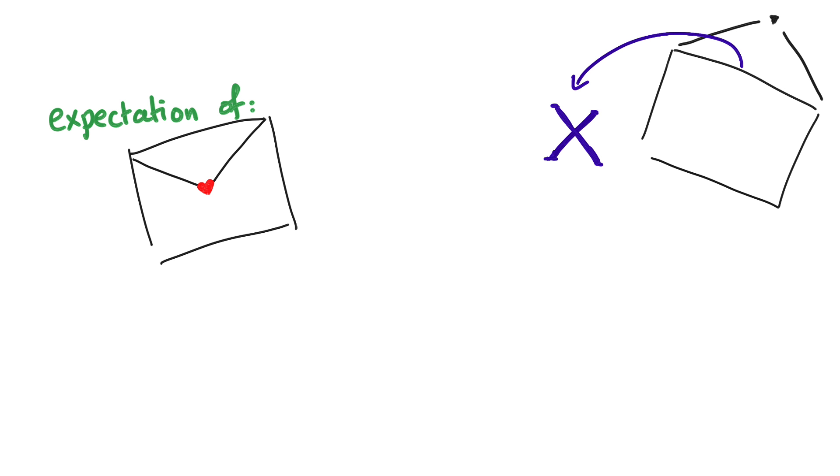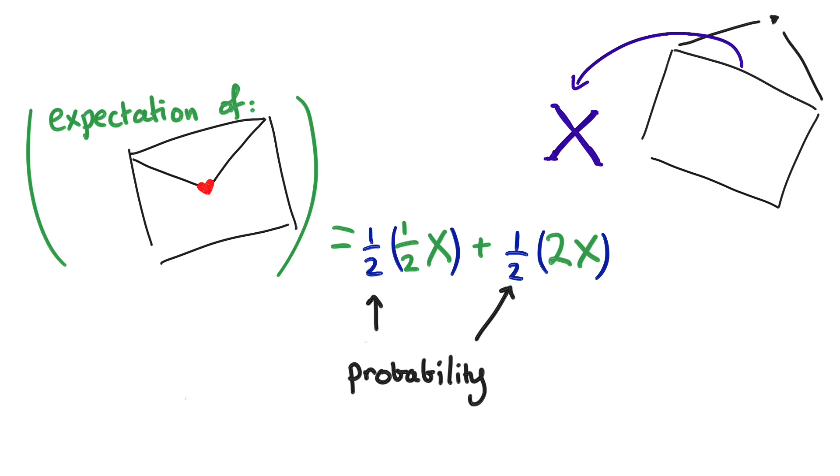You say the amount of money in the envelope you have is some unknown x. Then, let's figure out what the expected value is of the amount in the other envelope. Well, it's either half x or 2x and both are equally likely, so the expectation value should be this.